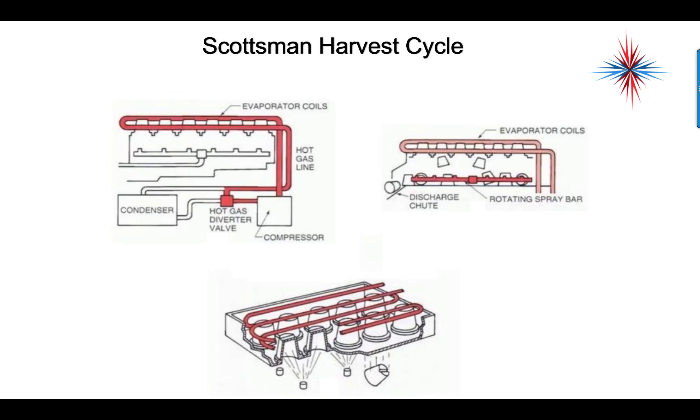A Scotsman's harvest cycle uses hot gas, and that hot gas starts warming these little cups up, and the ice just falls out of it by gravity.